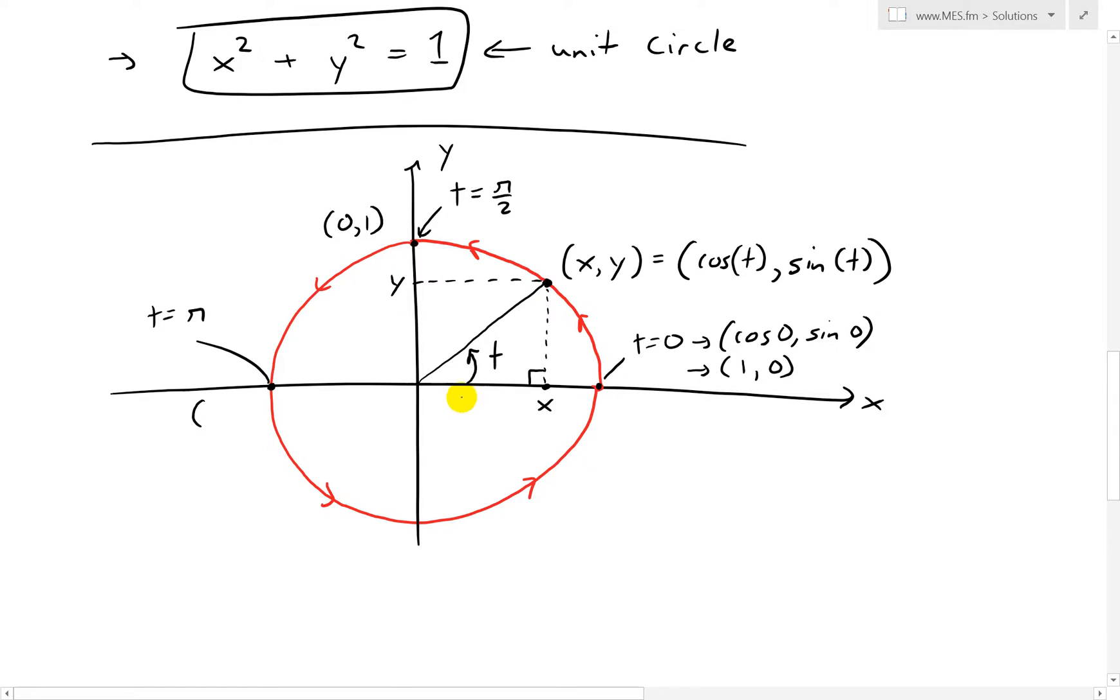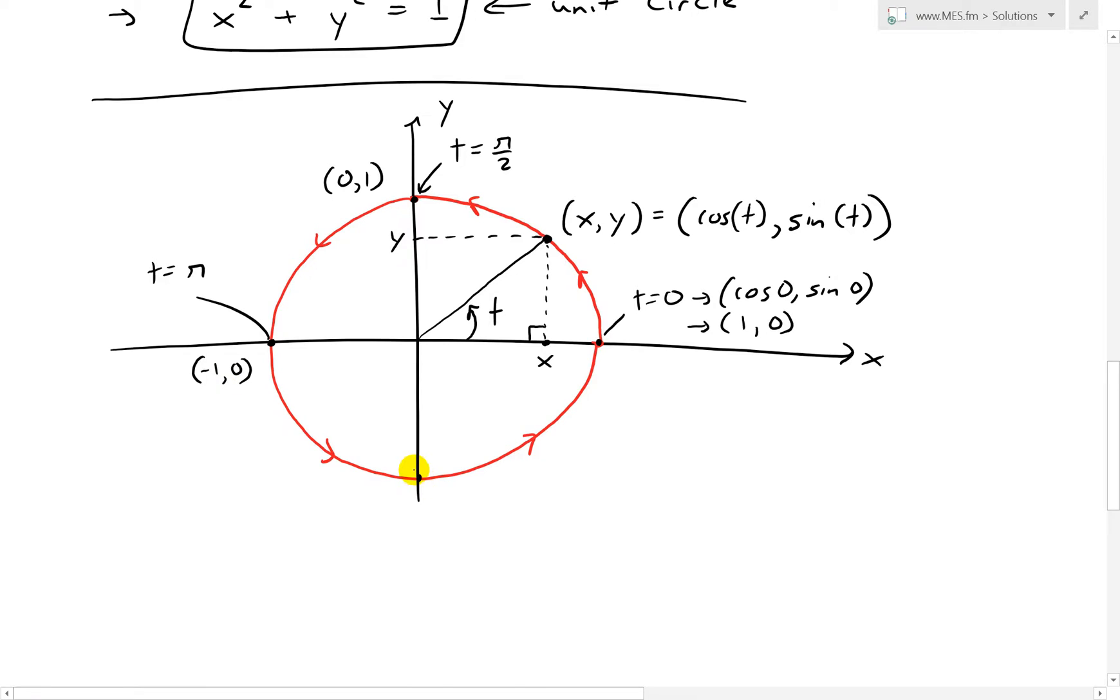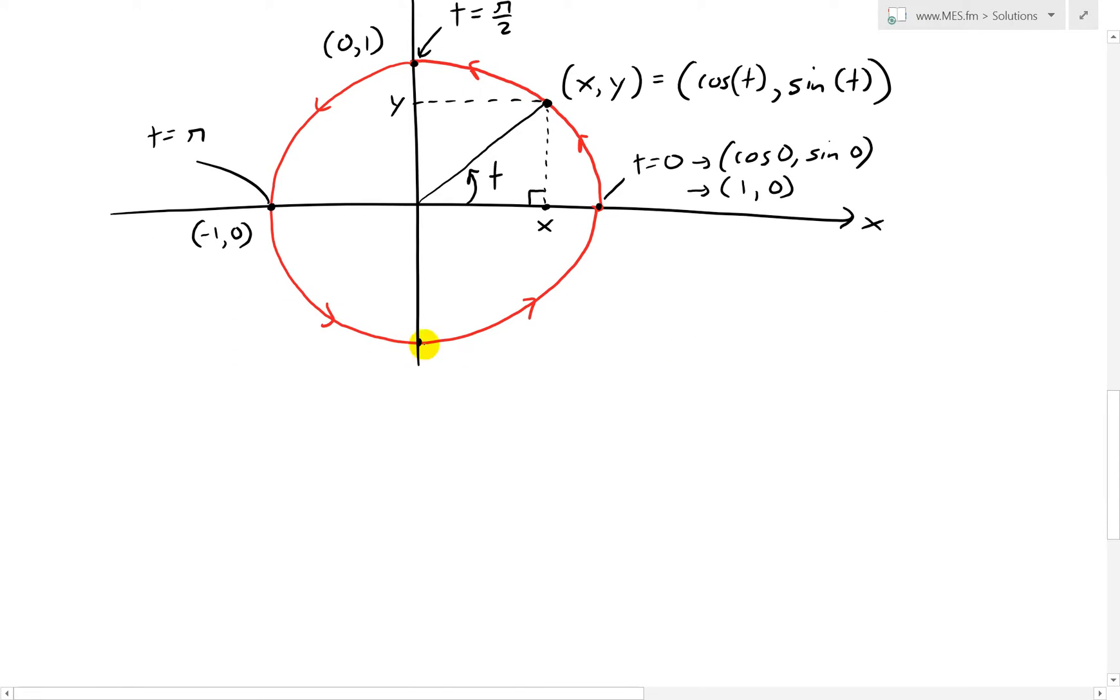And then at this value right here, we have it as negative 1 and 0. And then all the way over here, what we get is the value. This is at 0 and negative 1. And then this is three quarters of a circle. So we have 3 pi over 2. And then going all the way across to here, we get the final one. t is equal to 2 pi, which is the starting point at 1, 0.